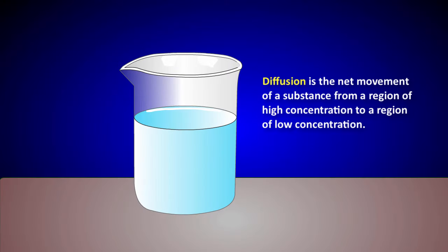Diffusion is the net movement of a substance from a region of high concentration to a region of low concentration.